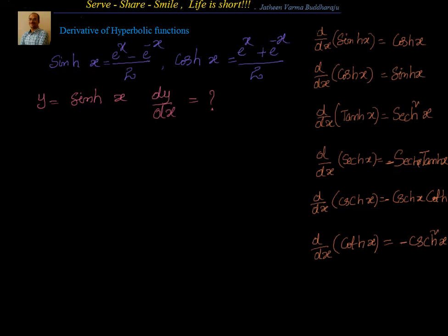Hello friends, welcome back! In this session, let's look at how to find the derivative of hyperbolic functions. We have seen derivatives of trigonometric functions, and in the last session, inverse trigonometric functions. Now we will see how to find the derivative of hyperbolic functions, which is very simple because we know sinh(x) = (e^x - e^(-x))/2 and cosh(x) = (e^x + e^(-x))/2, and the derivative of e^x is simply e^x.